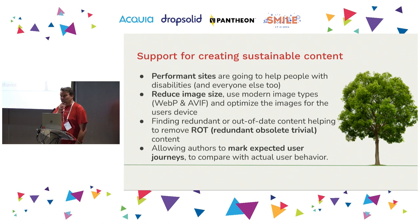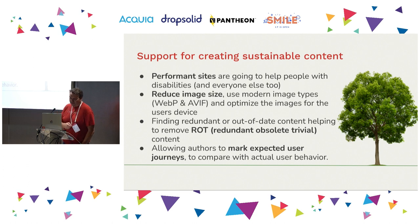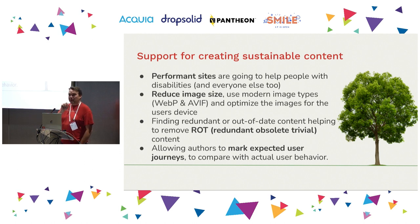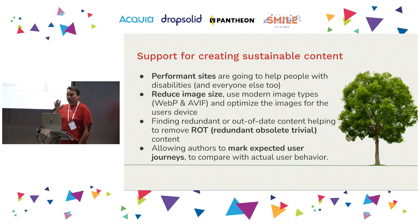There's another element important for sustainability: removing ROT — redundant, obsolete, trivial content. If you have better, more organized content, it'll be easier for everyone to find it, including people with disabilities. Trying to make sure you've thought through and organized your content in a way that allows people to find the information they need as quickly as possible. I also think it's useful to start marking user journeys — I don't think there's any way in Drupal to mark a user journey, but if we can talk about user journeys and evaluate them within our analytics tools, we could run an automated test of these five URLs used for going from A to B to C before they get to the final product.